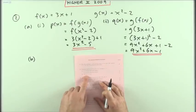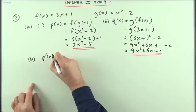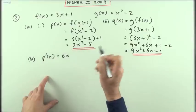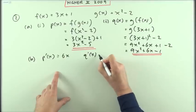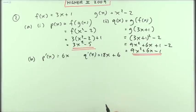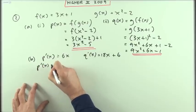Part b: solve p'(x) equals q'(x). p'(x) should be easy enough. Multiply by the power, take one off the power, the constant term doesn't produce anything. So p'(x) is 6x. q'(x): multiply by the power, that's 18x, and the linear term gives plus 6.